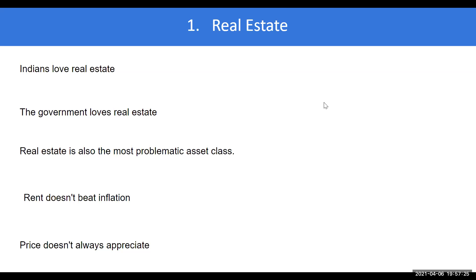Nearly two-thirds of you — 72% — chose the answer 'protecting wealth,' which is the correct answer for insurance. But ideally I was hoping more than 90% of you would choose that. The primary purpose of insurance is to protect wealth. Tax saving, building a second income, or building wealth are all secondary purposes. You should evaluate every insurance policy mainly on how much it protects your current wealth.